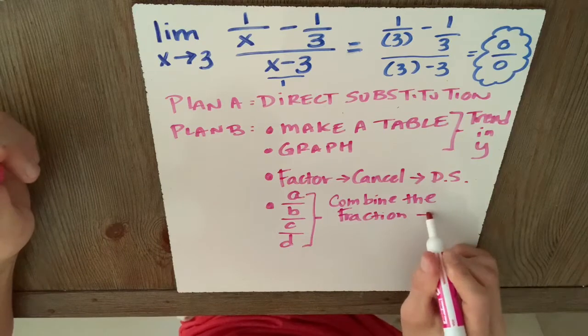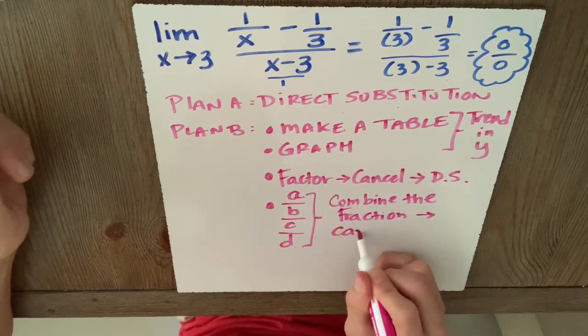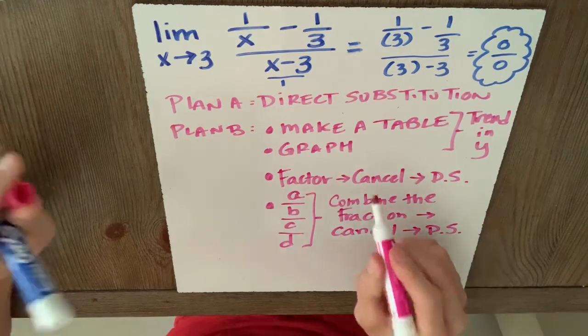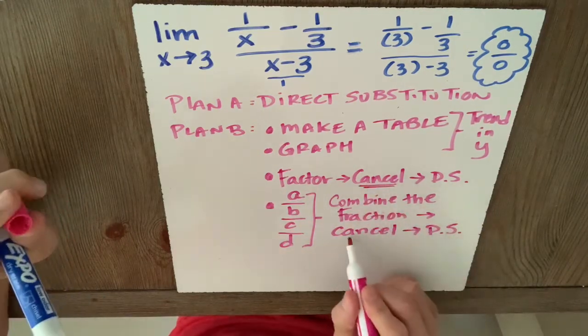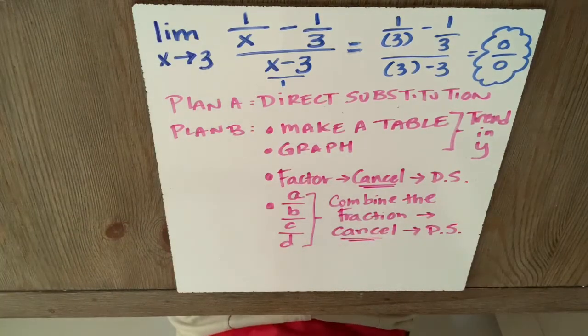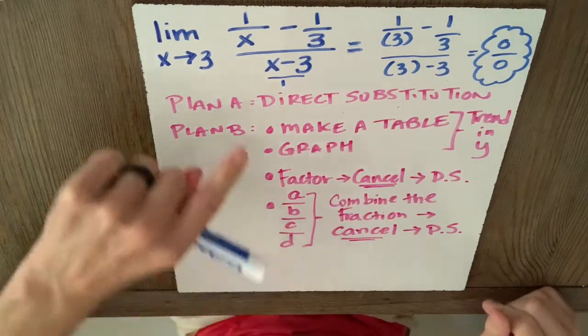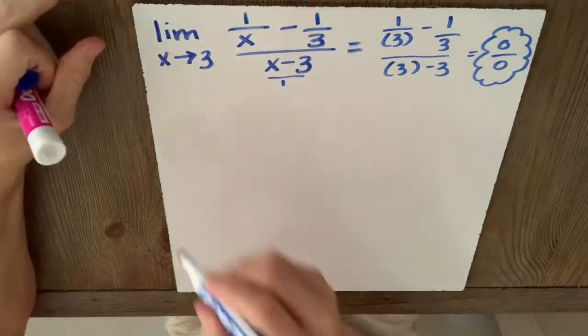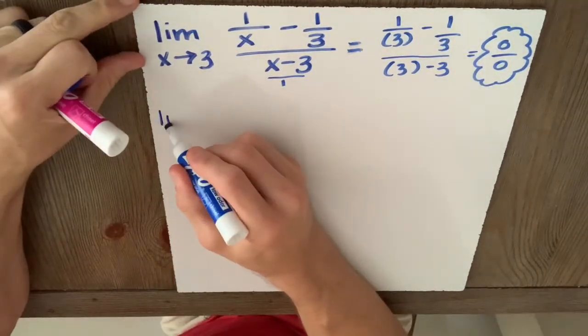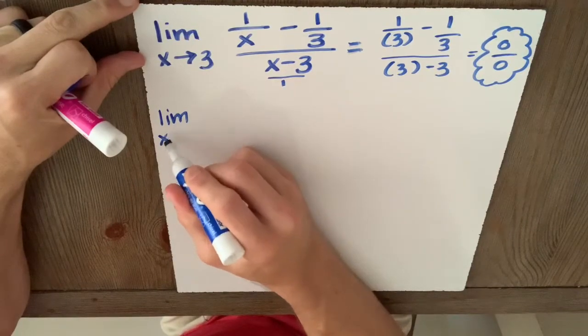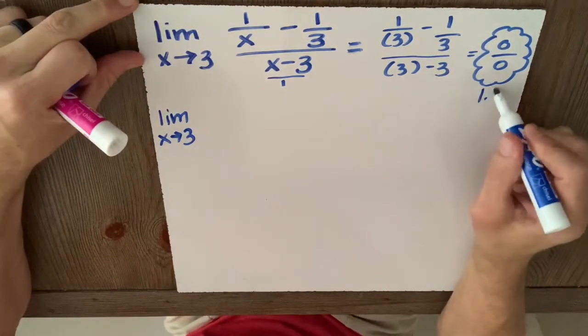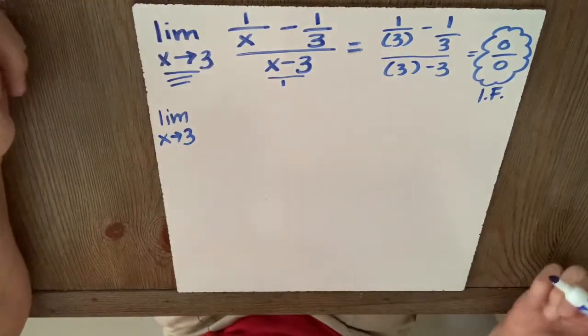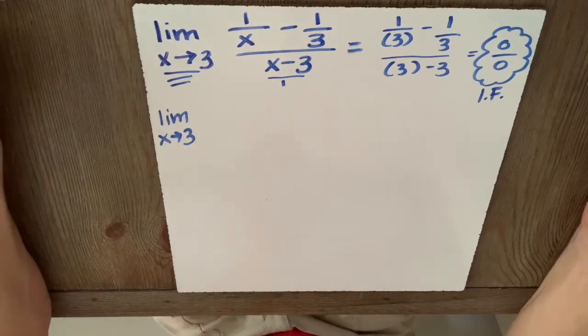And then I'm going to try to cancel. And then I'll go with direct substitution. Interesting that I'm going to try to cancel. That seems to be an important step. So this is the method I'm going to use on this complex fraction. So I'm going to write this again after my direct substitution did not work. It gave me this indeterminate form, which just tells me there's a hole at x equals 3. I don't know the y coordinate yet.